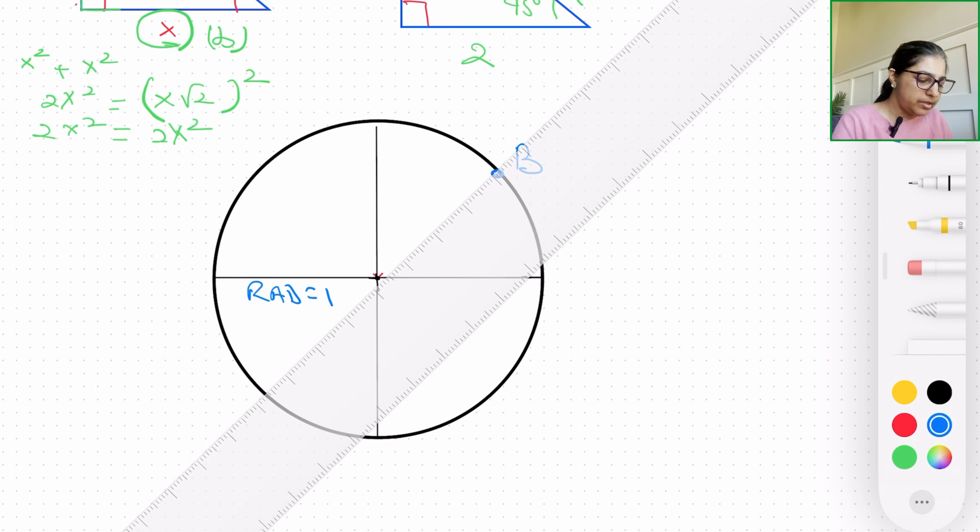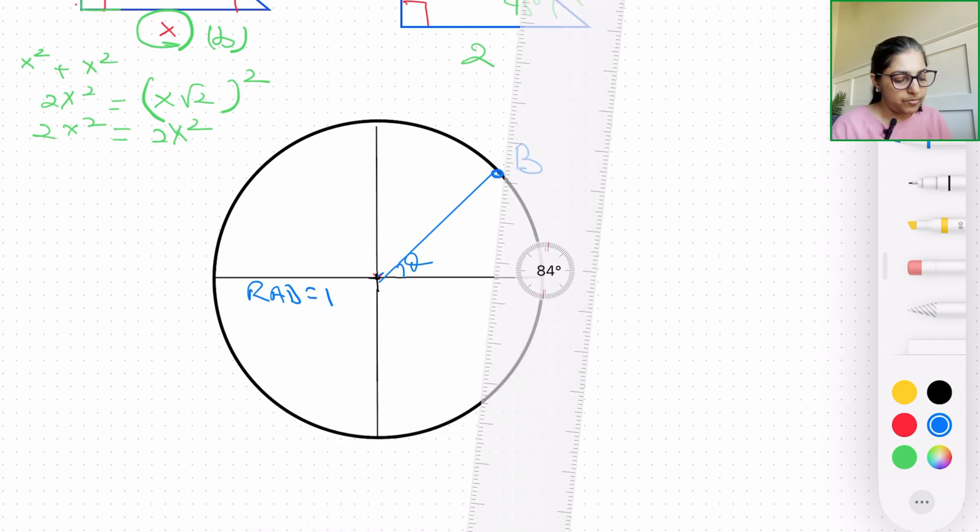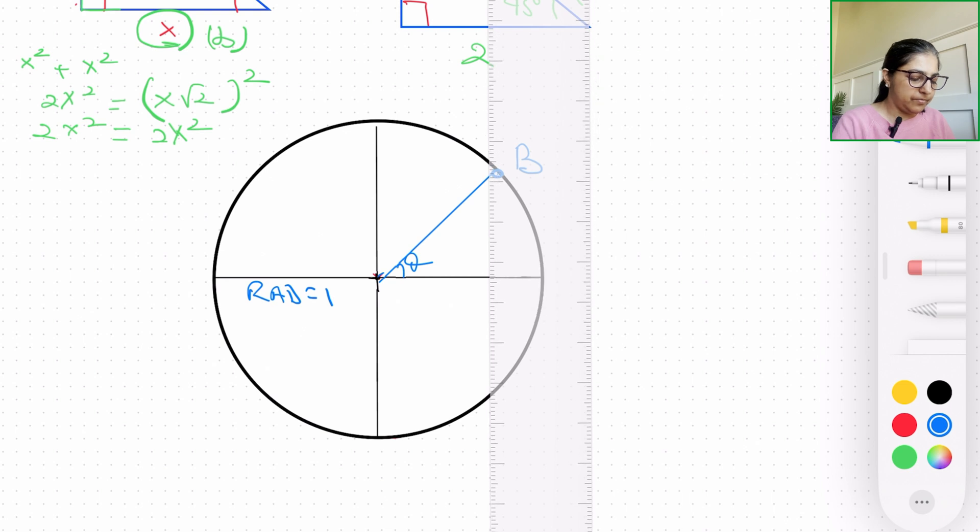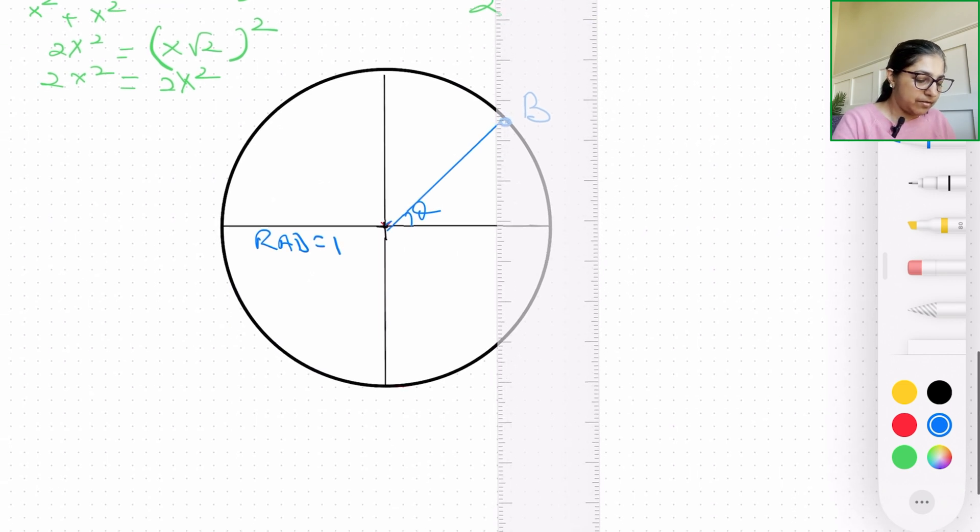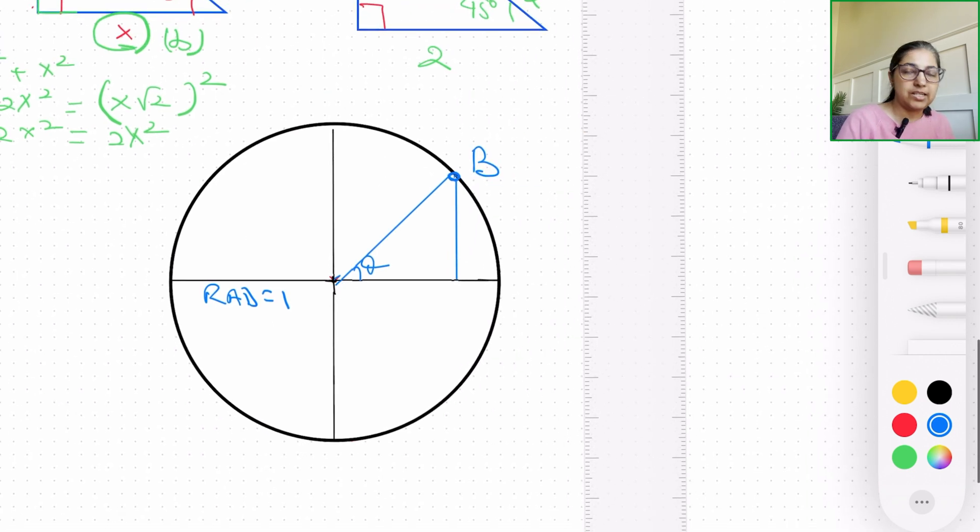So if we just pick any point B, or any point here, and we just join it with the center at some angle θ, and we drop a perpendicular from this point B onto the x-axis, we get a right angle triangle, as you can see that I've drawn in blue. So if I say this is A, this point is C, ABC becomes a right angle triangle.